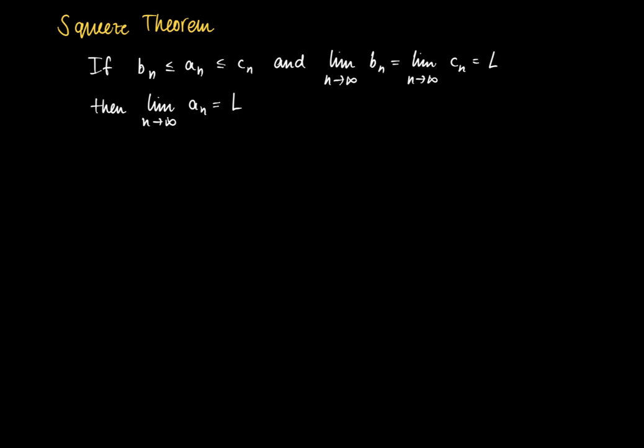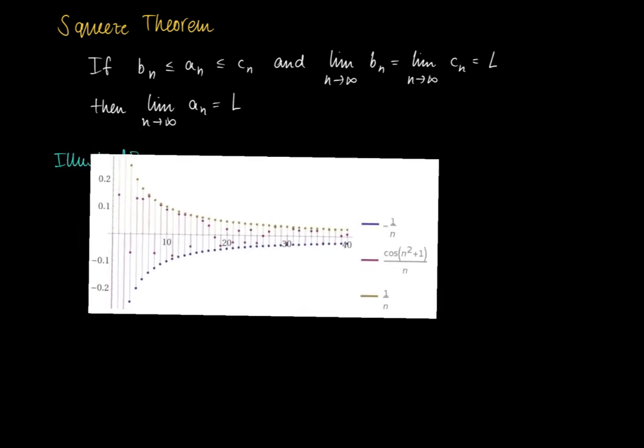There's not so much space to move around for the sequence an, so an must have the same limit L. So I will illustrate this using the following example. Sometimes it's convenient when you cannot calculate a limit directly that you actually compare some terms.